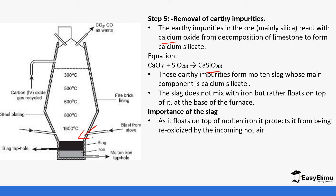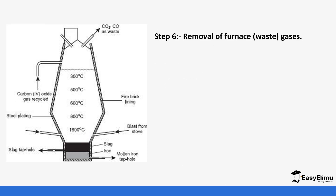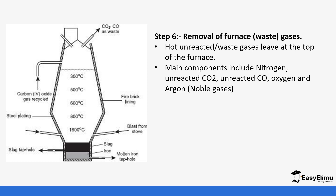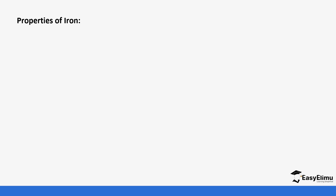The slag also protects iron from being re-oxidized — this is a common examinable point. Some uses of slag include making lightweight building materials, manufacturing cement, and manufacturing other building materials. Waste gases produced in the blast furnace include nitrogen, carbon monoxide, carbon dioxide, argon, and dust particles, which must be removed from the blast furnace.